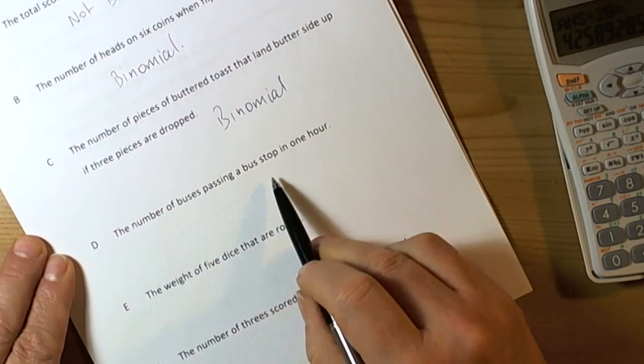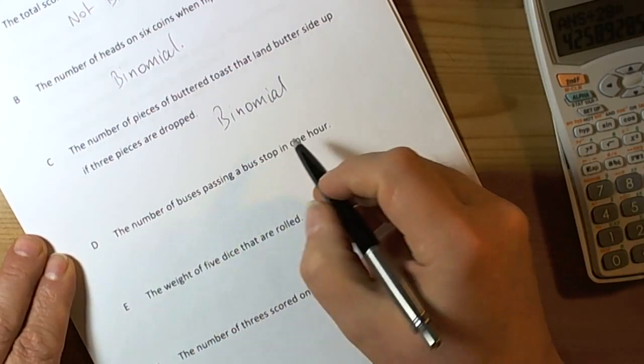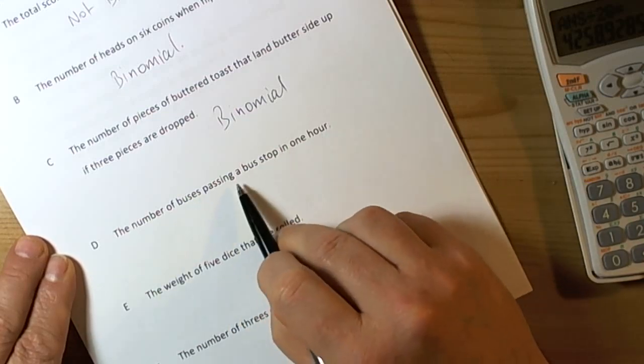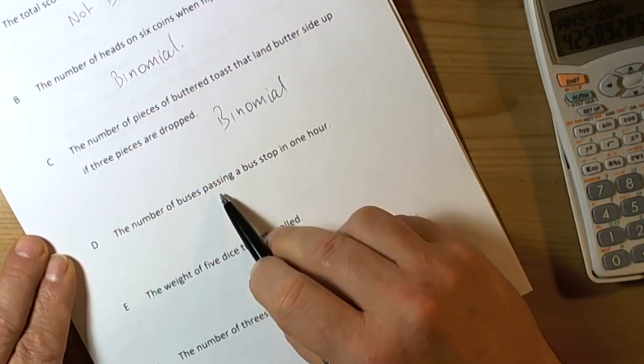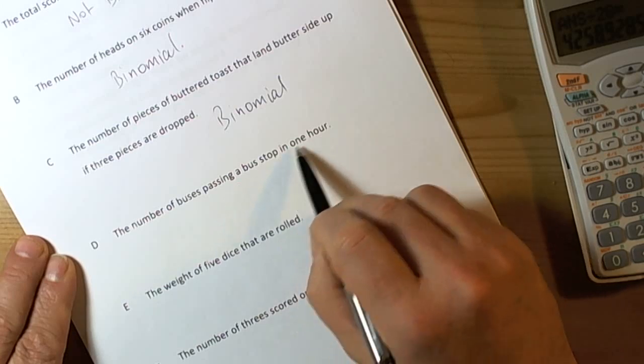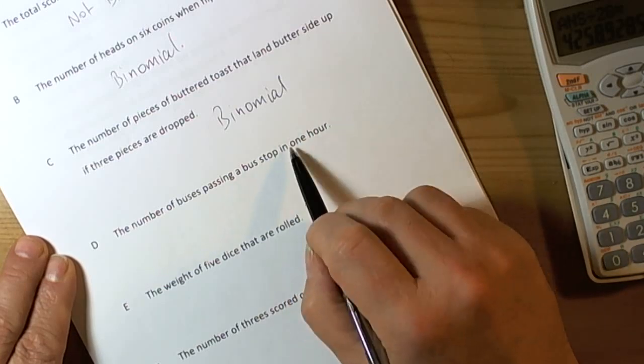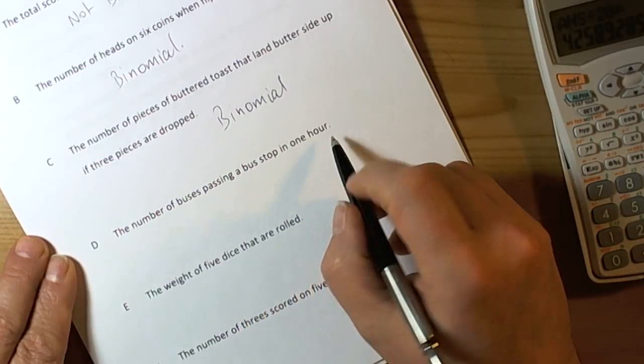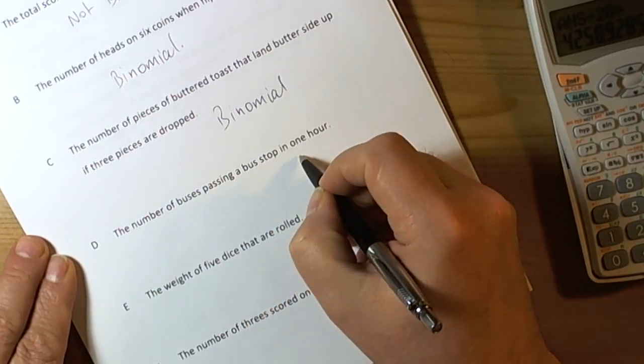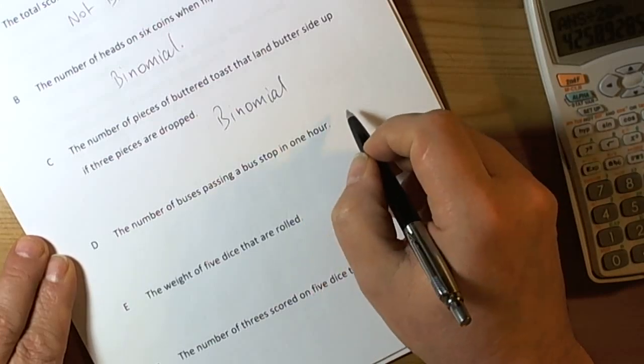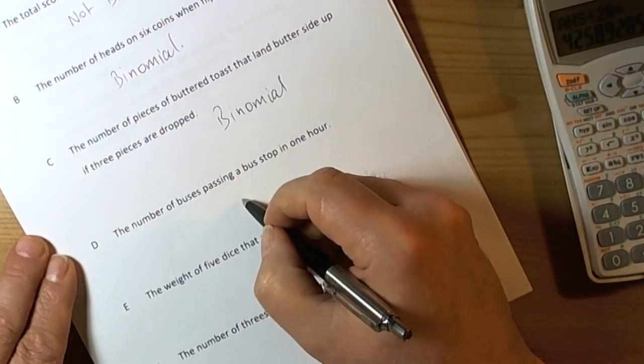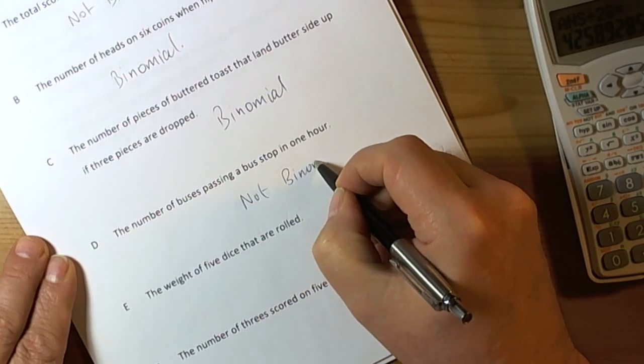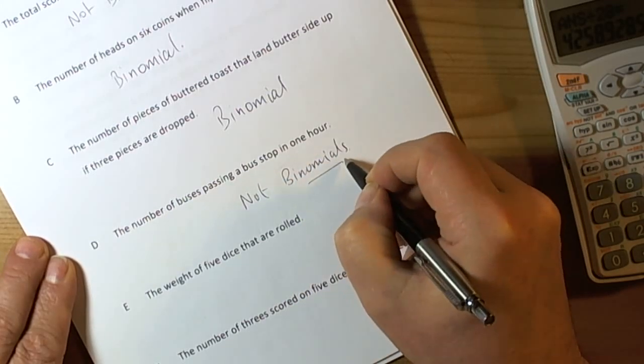The number of buses passing a bus stop in one hour. If buses stick to the timetables you'd hope that would be true, you'd have a fixed number of trials. But we don't know that because buses get stuck in traffic. So we haven't got a fixed number of outcomes. It could be one bus, two buses, three buses, four buses and so forth. So this one is not binomial simply because there's not a fixed number of outcomes.